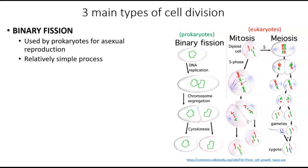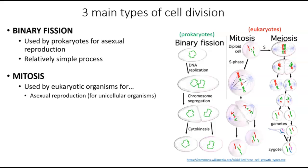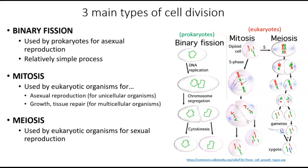The other two cell division processes occur in eukaryotes, so they're a bit more complicated, simply because eukaryotes are larger, more complex cells with multiple chromosomes. Mitosis is used by eukaryotic organisms for a few different purposes. In unicellular organisms made of just one cell, it's used for asexual reproduction. In multicellular organisms, such as humans, it's used for growth and tissue repair. Meiosis is a different type of cell division used in eukaryotes for sexual reproduction, requiring special cells called gametes, which you know as eggs and sperm. We're going to learn more about meiosis in a few weeks, but today we're going to focus on mitosis.